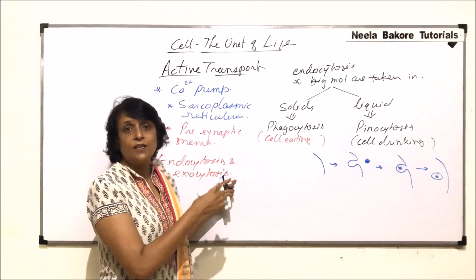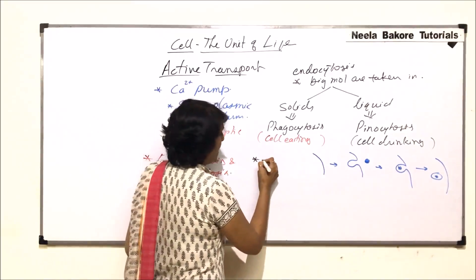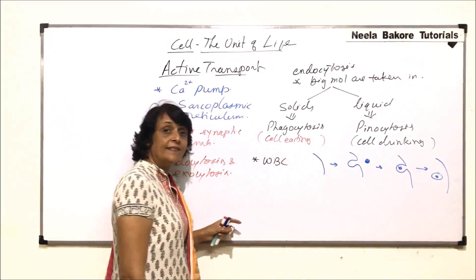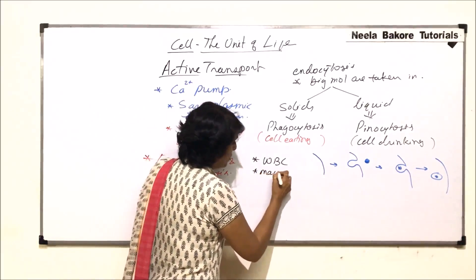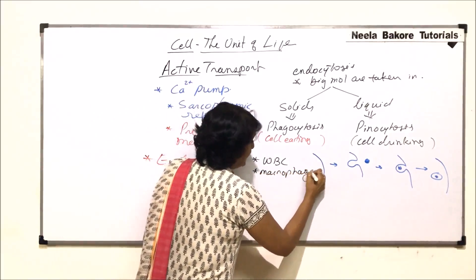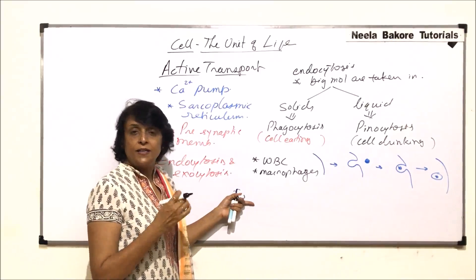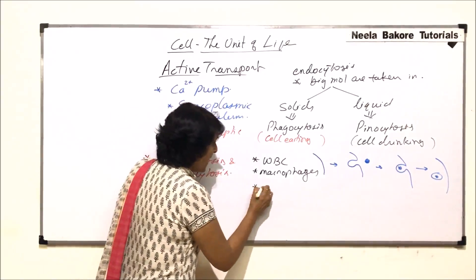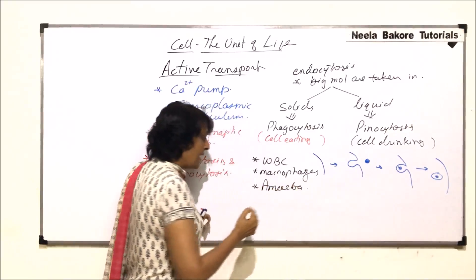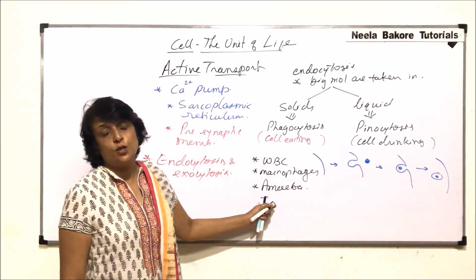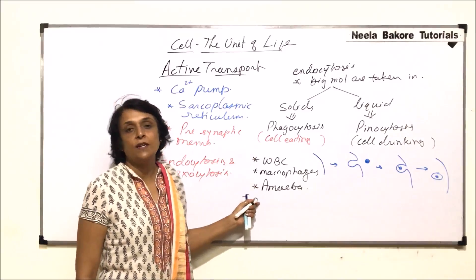Phagocytosis is performed by WBCs when they engulf foreign particles, and by macrophages. These cells are called phagocytic cells because they engulf solid particles, which could be in the form of pathogens. Another cell which performs this process is amoeba, which takes in food by phagocytosis. These are some common examples where phagocytosis takes place.